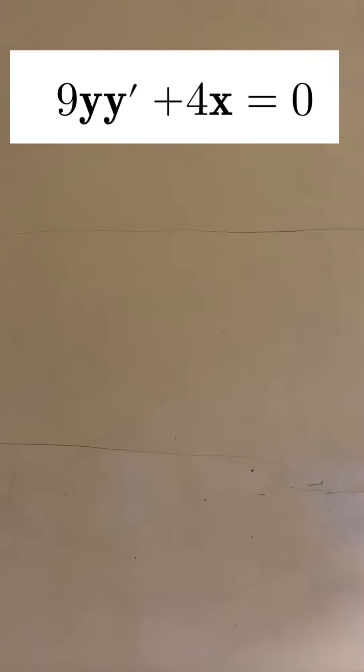Find the general solution of the differential equation 9y times y prime plus 4x equals 0. Join me as we go through this step by step.